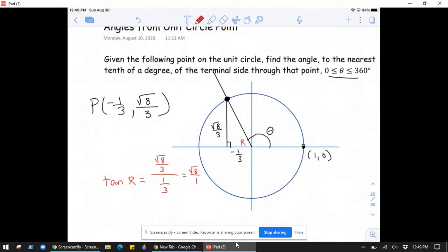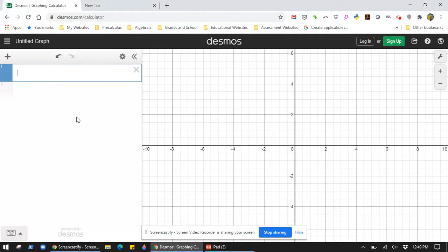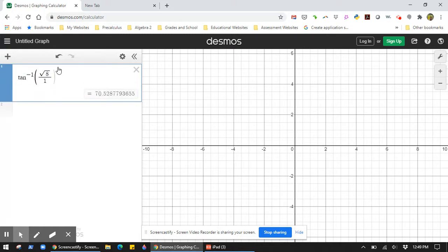And for tangent, you input angles and you get out ratios. That means that inverse tangent gives you the angle so long as you put in the ratio. So let's see what this is. We need a computer to do it, or a calculator. I'm going to use Desmos. So you type in tan inverse of square root of 8 divided by 1. Okay, and you get 70.5 degrees about.